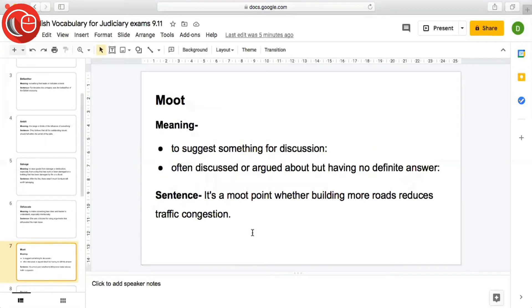The next word is moot. So moot has got two meanings. The first meaning is to suggest something for discussion. The second meaning is often discussed or argued about but having no definite answer. Koi cheez jisko kaafi baar discuss kar chuke hain, kaafi baar argue kar chuke hain jiske liye lekin abhi bhi koi definite answer nahi mil raha hai. Sentence: It's a moot point whether building more roads reduces traffic congestion. Yeh ek bahut common topic of discussion ban chuka hai ki kya more roads banane se traffic congestion kam hoga. So it has become a very well argued discussed point.